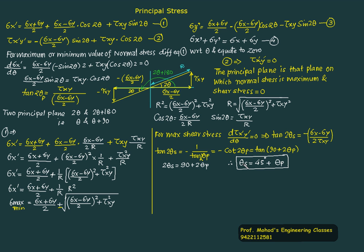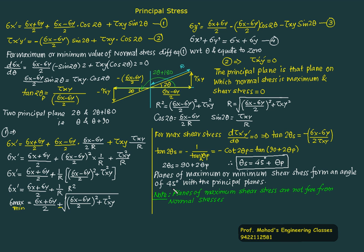The maximum shear stress always exists at an angle of 45 degrees from the principal plane. The planes of maximum or minimum shear stress form a 45-degree angle with the principal planes. The planes of maximum shear stress are not free from normal stress, whereas the principal plane is always the plane where shear stress equals zero. On the principal plane, shear stress is zero, but on the maximum shear stress plane, normal stress may still exist.